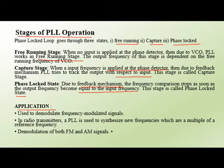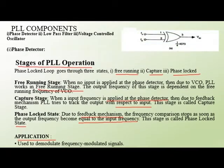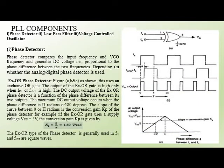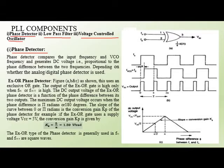In this slide we are discussing the PLL components. The three components are: the phase detector, the low pass filter, and the voltage control oscillator. Starting with the phase detector — it compares the input frequency and VCO frequency, and generates a DC voltage proportional to the phase difference between the two frequencies, depending on whether an analog or digital phase detector is used. One example is the exclusive-OR (XOR) phase detector.